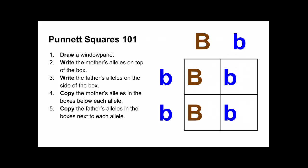Then we're gonna copy the father's alleles in the boxes next to each of his alleles. So we're gonna move that little b over into the first box, and the second box, and same thing on the bottom. So that's our completed Punnett square.